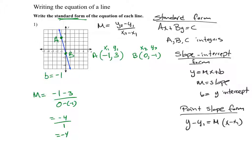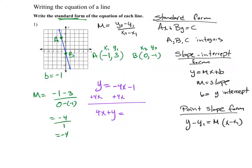Now I have all the information I need, so I'll plug it into slope-intercept form: y equals negative 4x minus 1. To convert to standard form, I add 4x on both sides, giving me 4x plus y equals negative 1. That's my standard form of this line.